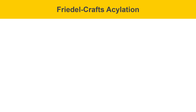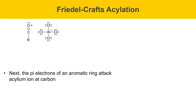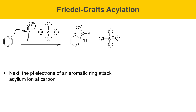Continuing with the mechanism of the Friedel-Crafts acylation reaction: the acylium ion is redrawn in its most stable resonance form, and in the next step, the pi electrons of the aromatic ring attack the acylium ion at its carbon atom. Using benzene as an example, the pi electrons attack the carbon atom of the acylium ion and a pair of electrons is moved up onto oxygen. This gives a non-aromatic intermediate — it's non-aromatic because the carbon highlighted in pink is sp3 hybridized, so it's not fully conjugated. It's lost its aromatic stabilization and it's fairly high in energy.